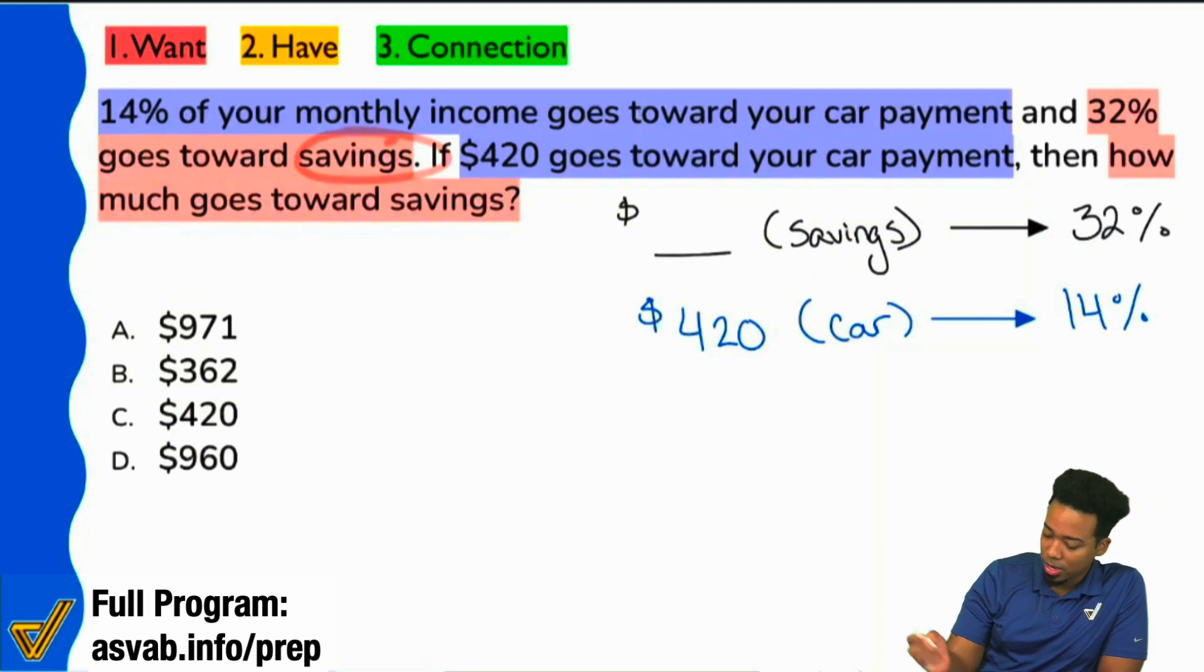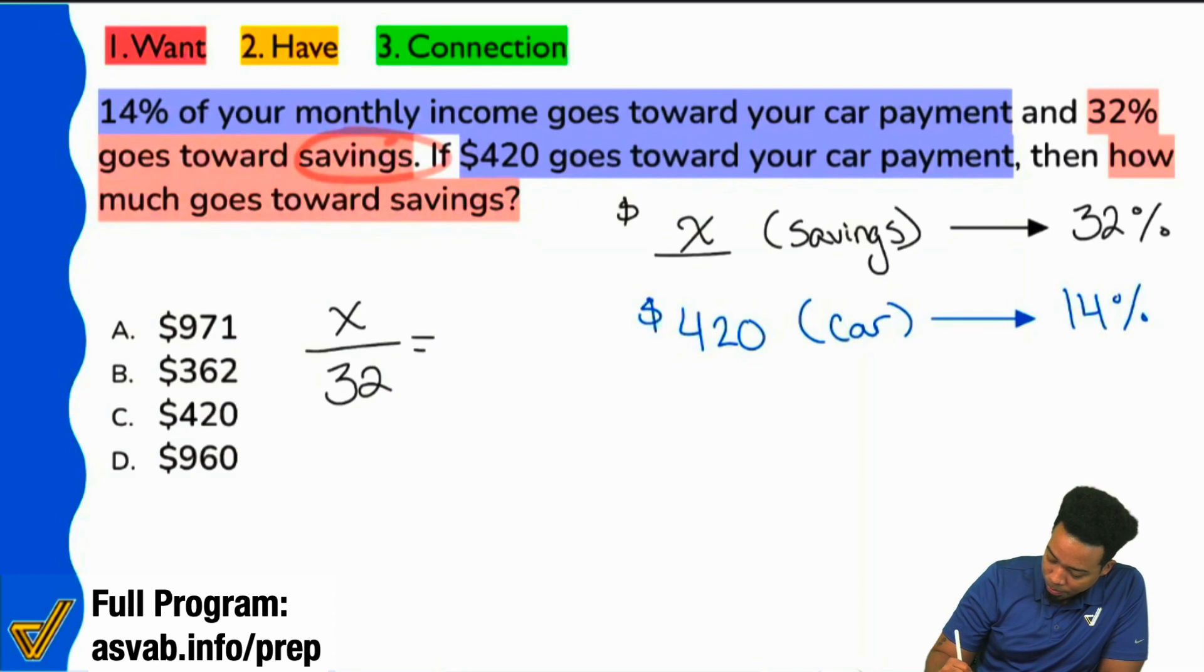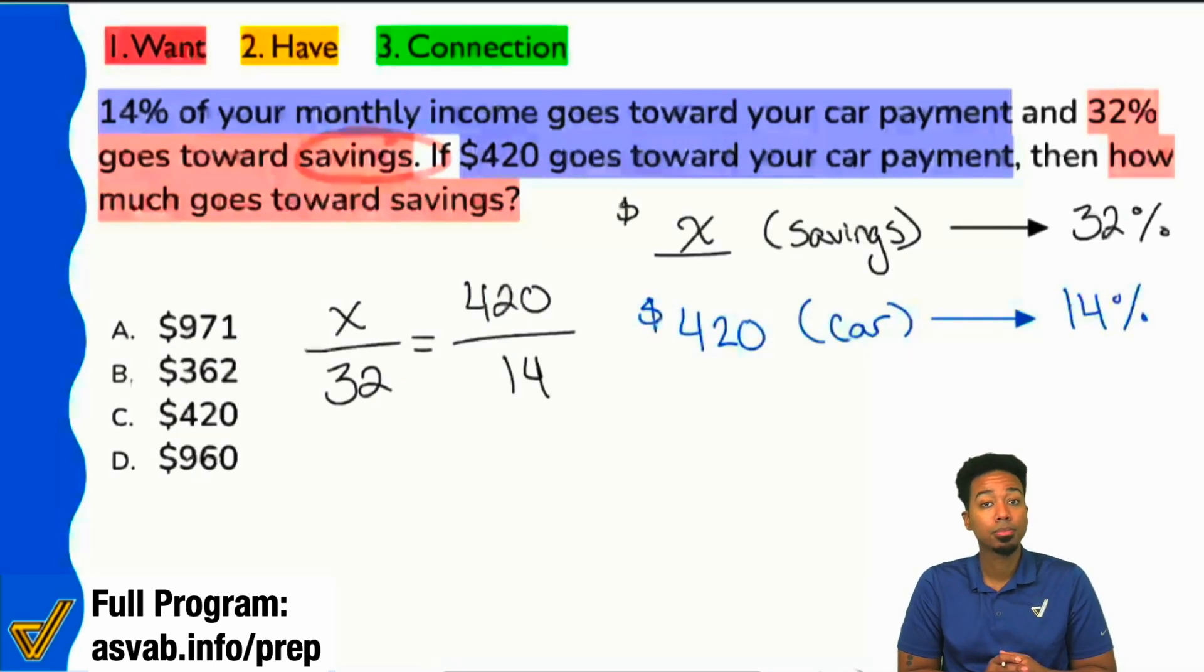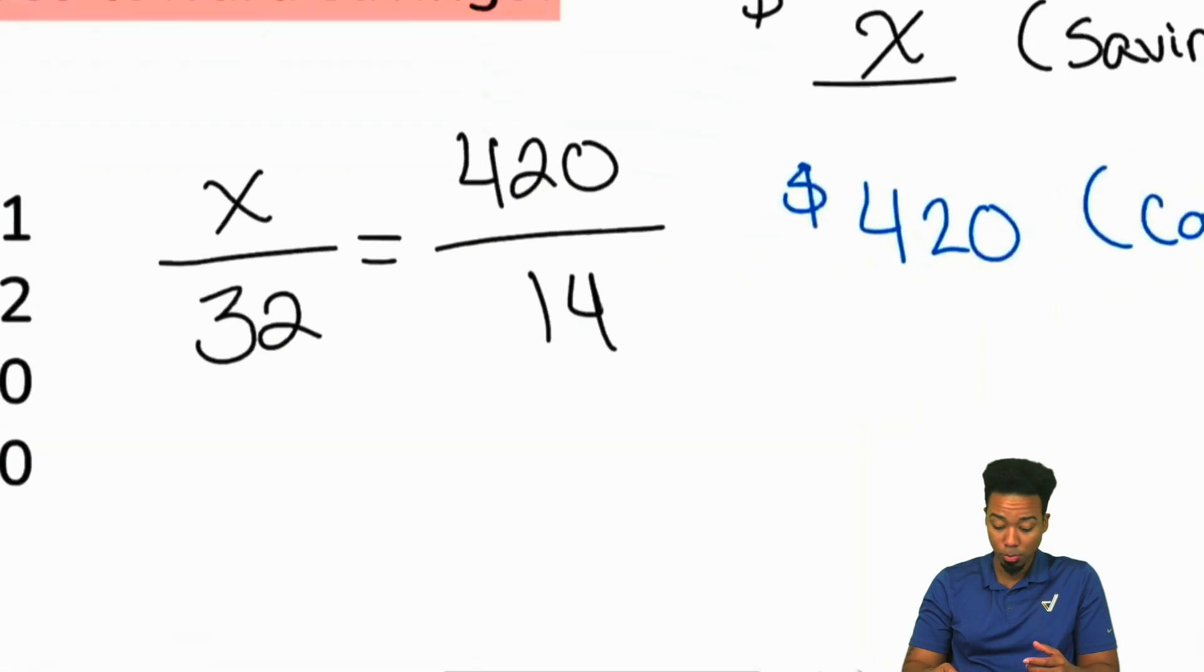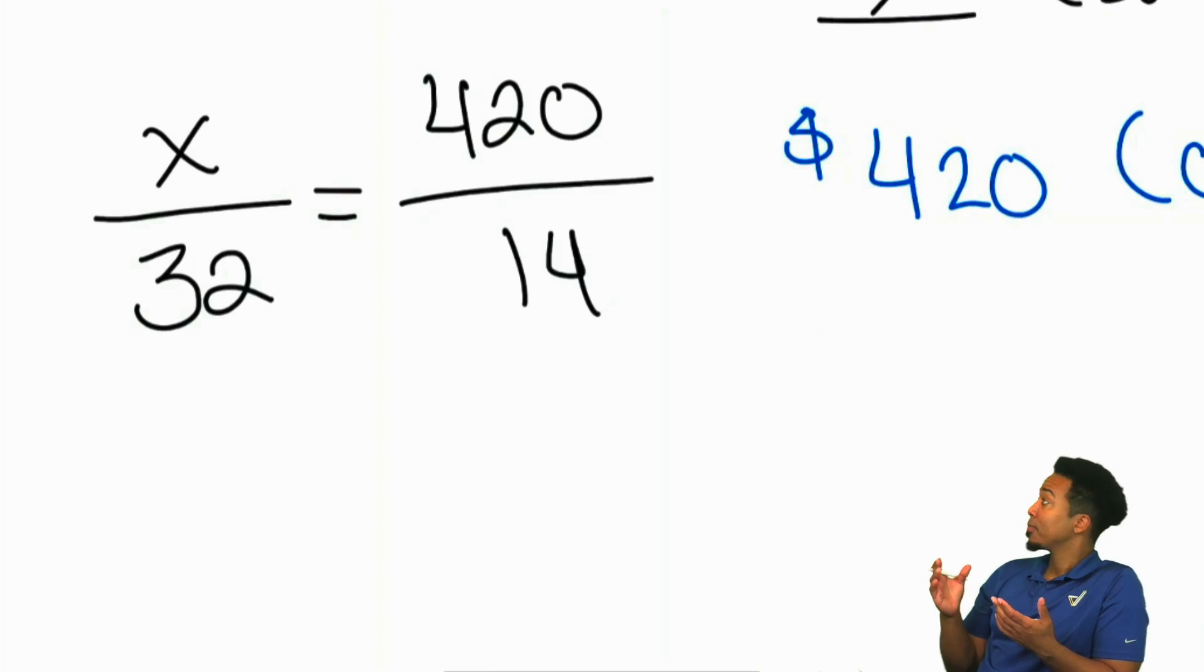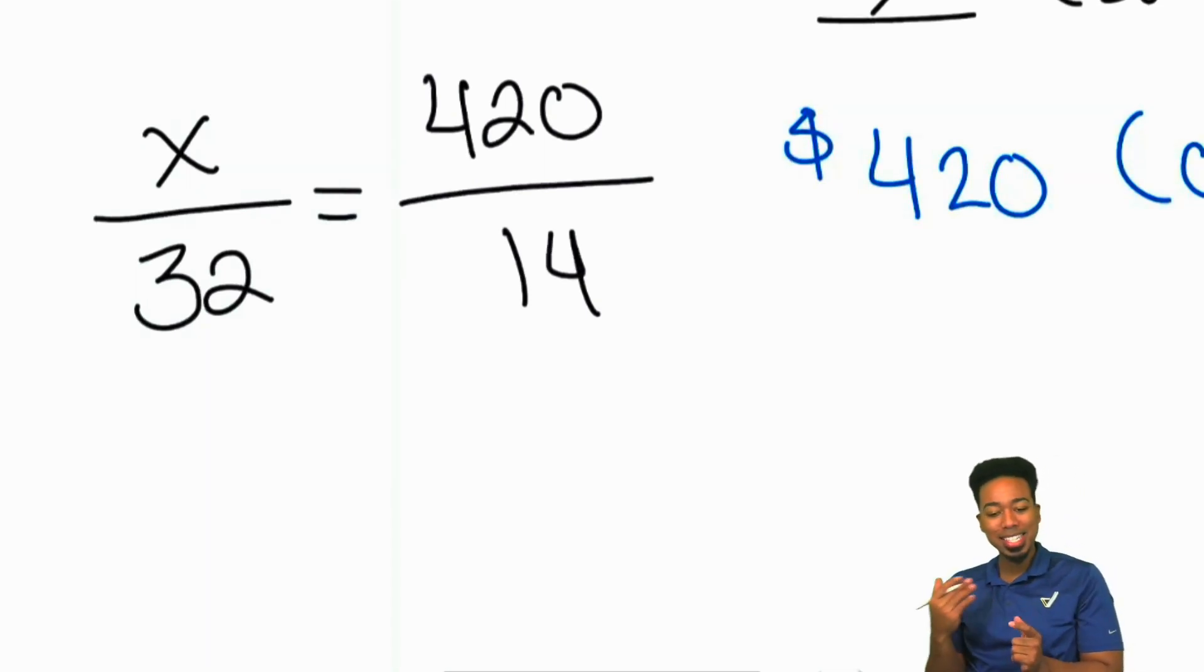And so, all we have to do now, set things up. I'll use X right here. We'll have X over 32 equals 420 over 14. And from here, we can just do what we need to do. We can try to cross multiply and divide if we want to, but I wouldn't suggest that. Because 32 times 420, no thank you. No thank you, is what I'm going to say to that. So instead, let's see what we can simplify.